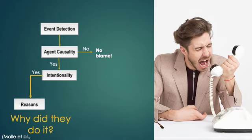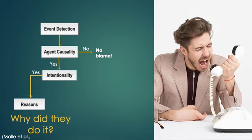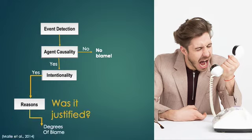If the causal agent is judged to have acted intentionally to bring about that norm-violating event, the perceiver considers the agent's reason for acting — why did they do it? Did they have a good reason to intentionally cause that to happen? Here is where we consider justifications or exculpating factors. Blame is then allocated based on whether the act was justified: minimal blame if justified, maximal blame if not.